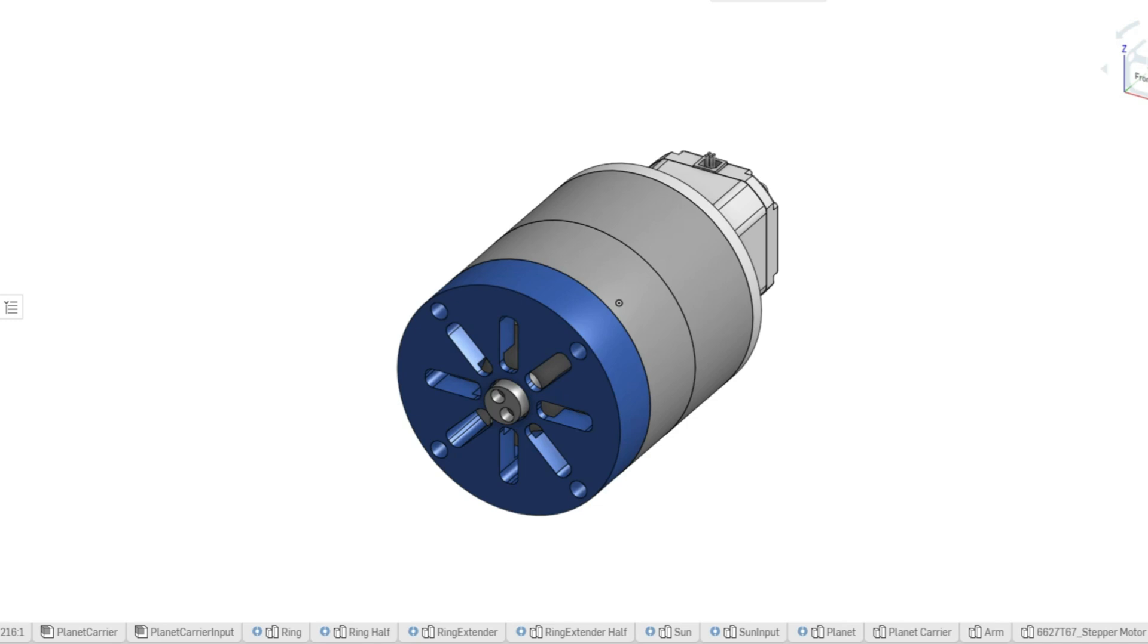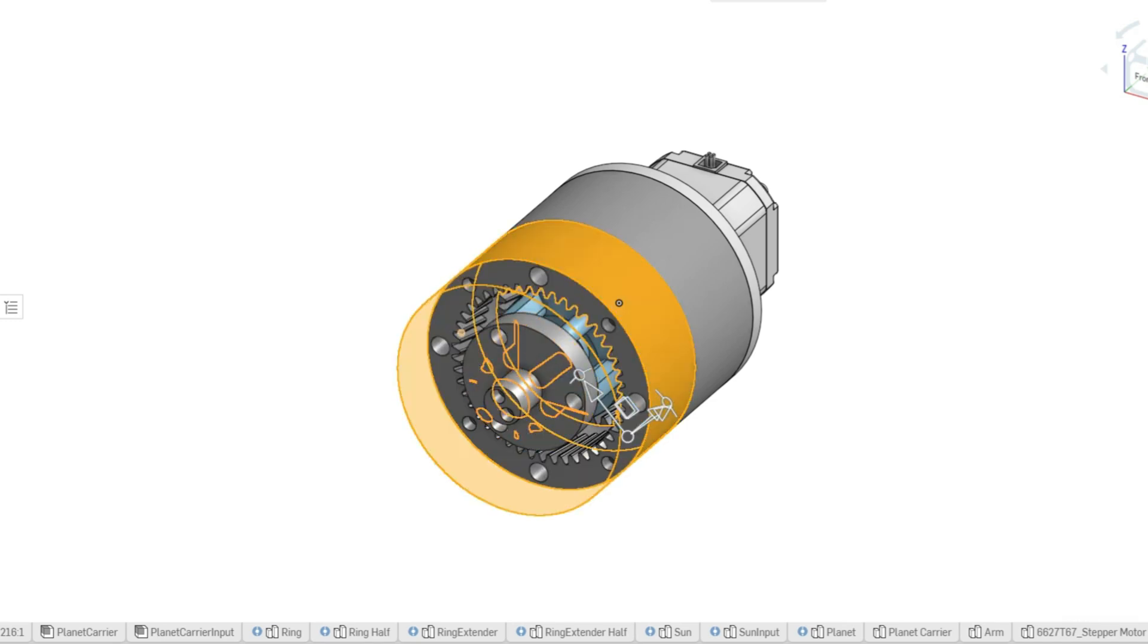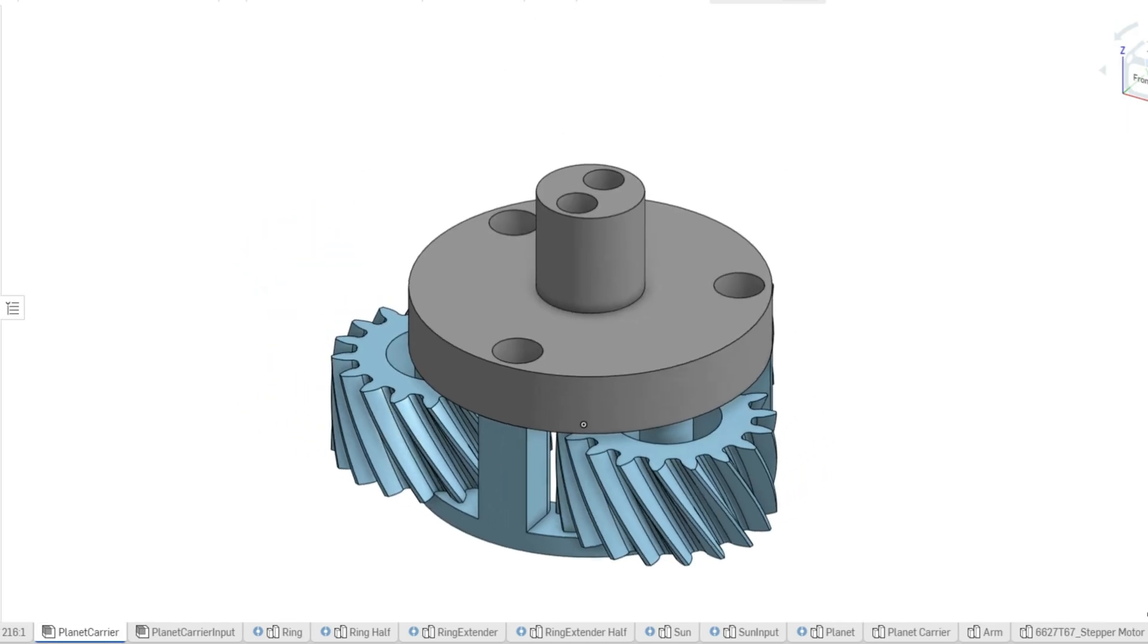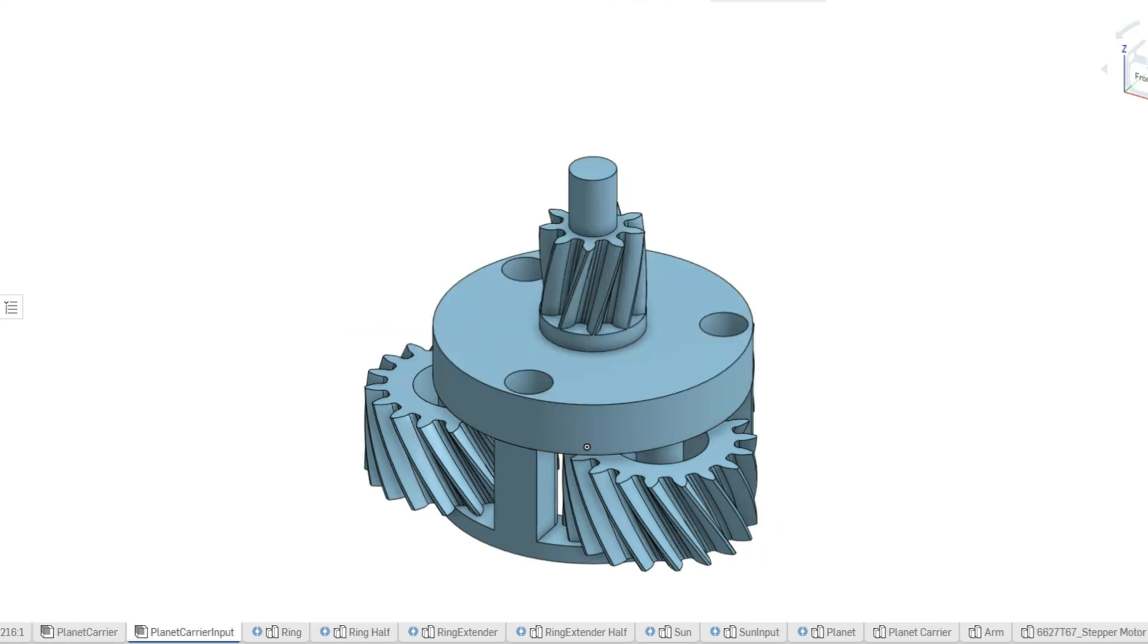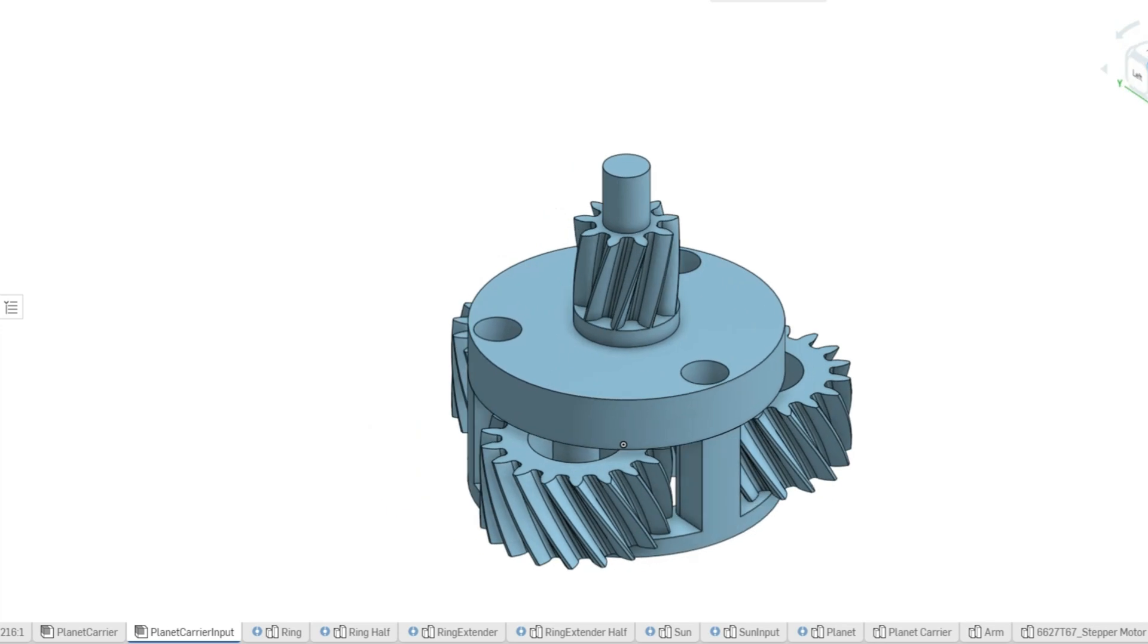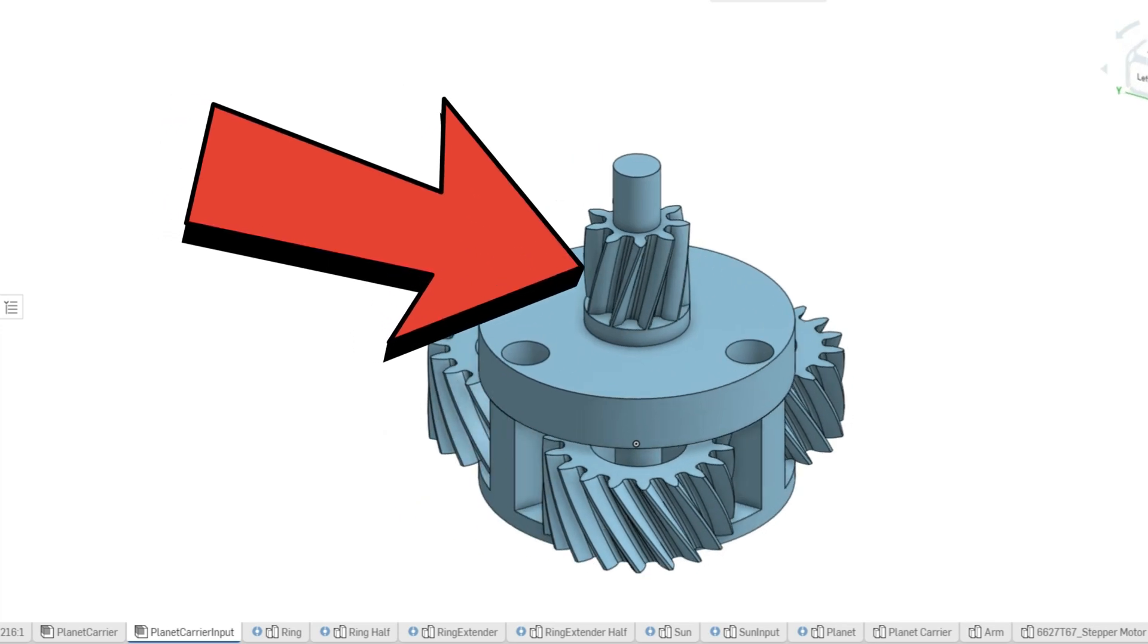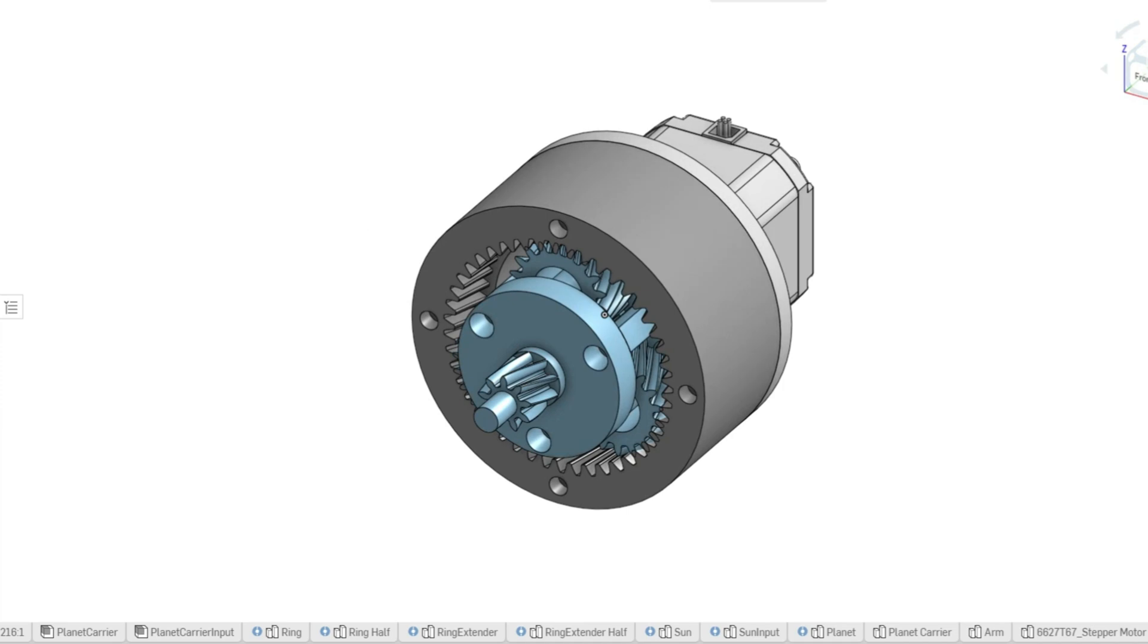So this is what the 36 to 1 gearbox is going to look like, but let me explain to you exactly how we achieve this. So first it all starts with the planet carrier. Initially the planet carrier was an output, now we're editing it to be an input. So we're using a sun gear as the top of the carrier instead of our regular output.